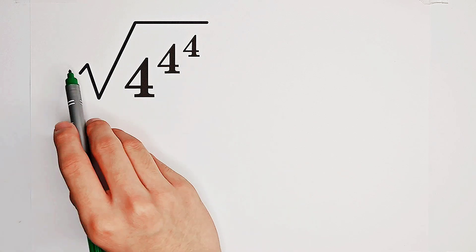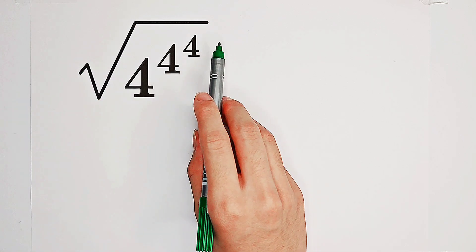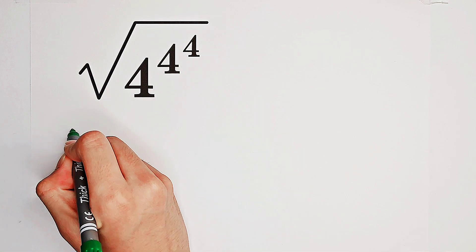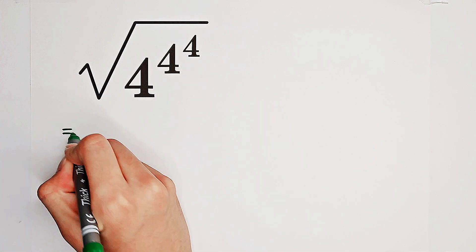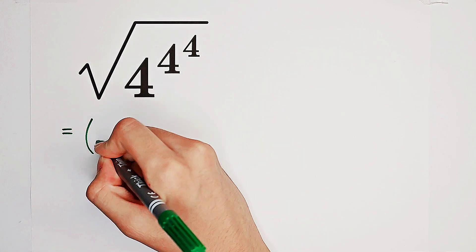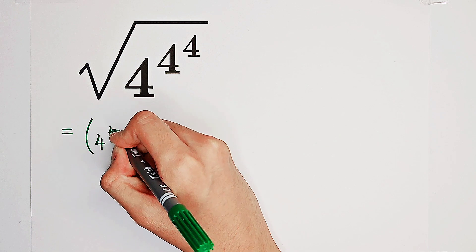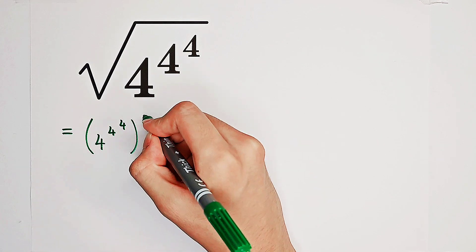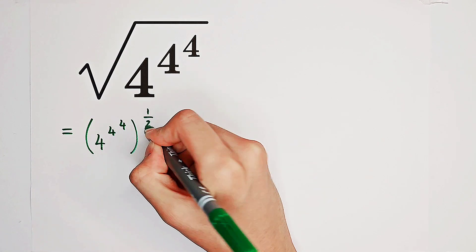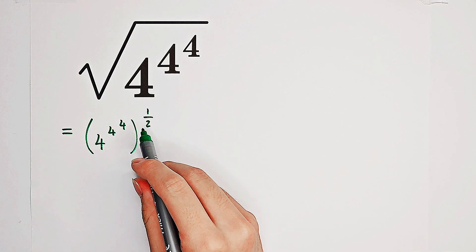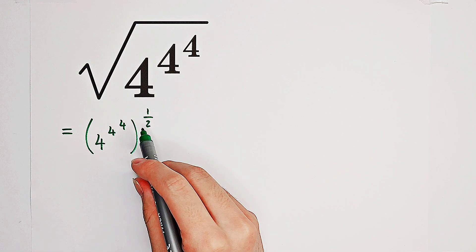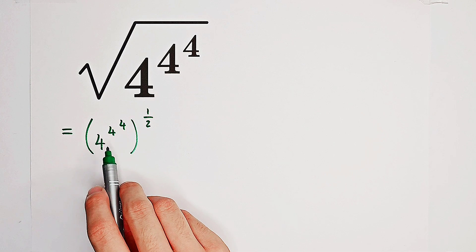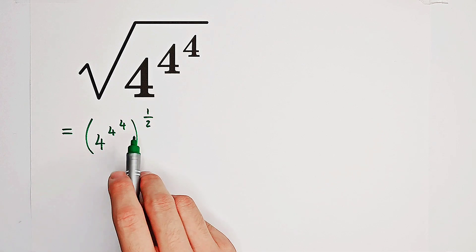Firstly, what shall we do? This square root is very ugly, so we can rewrite it. We rewrite 4 to the power of 4 to the power of 4 as the base, and the square root can be written as the half power — so it's 4 to the power of 4 to the power of 4, all to the power of 1 over 2.